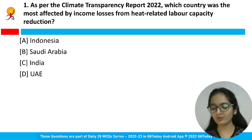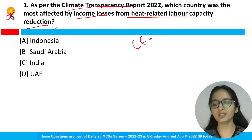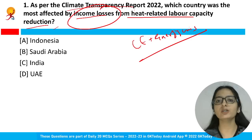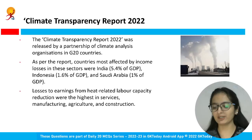The first question is associated with the Climate Transparency Report. According to the Climate Transparency Report 2022, which country was most affected by income losses from heat-related labor capacity reduction? This report links climate emergency and energy crisis. The answer is India — option C is correct.